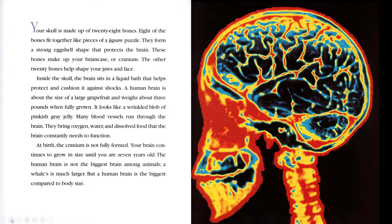It looks like a wrinkled blob of pinkish gray jelly. Many blood vessels run through the brain. They bring oxygen, water, and dissolved food that the brain constantly needs to function. At birth, the cranium is not fully formed. Your brain continues to grow in size until you are seven years old. The human brain is not the biggest brain among animals. A whale's is much larger. But a human brain is the biggest compared to body size.